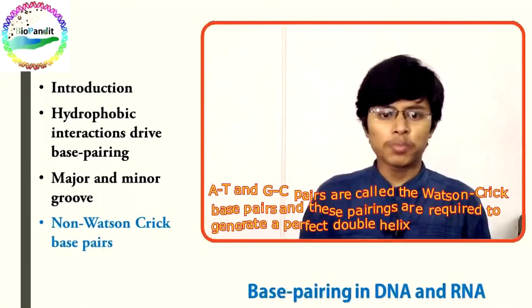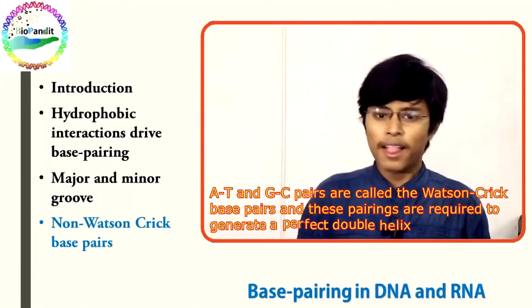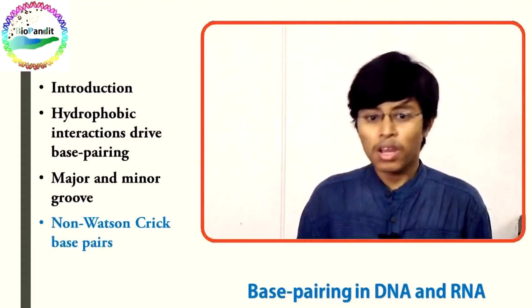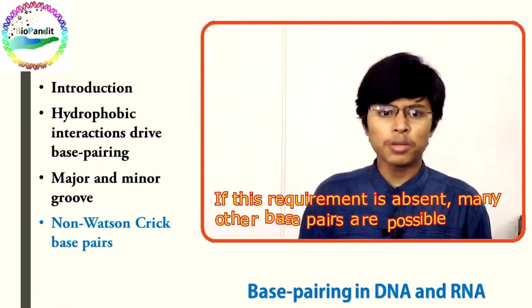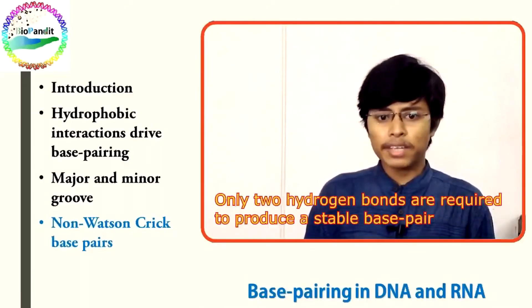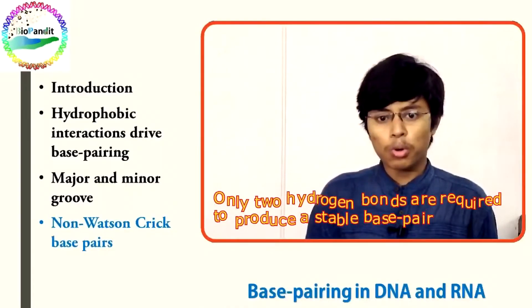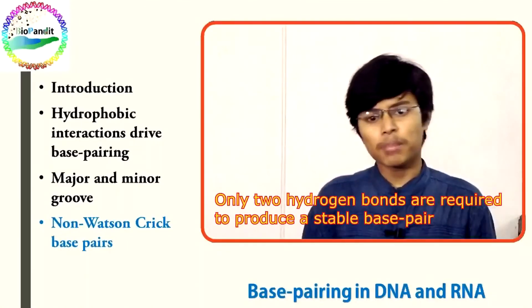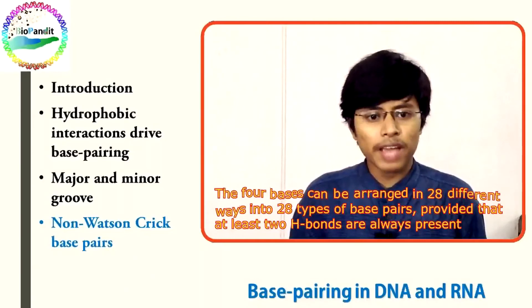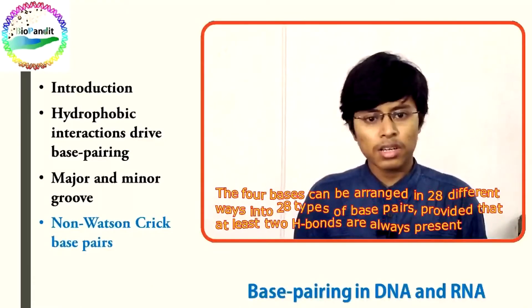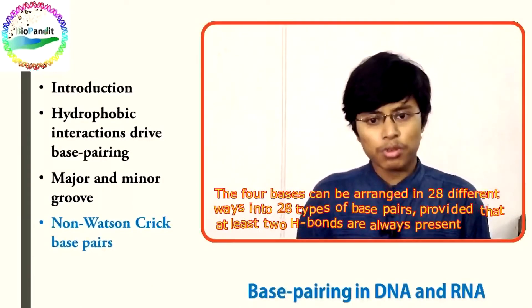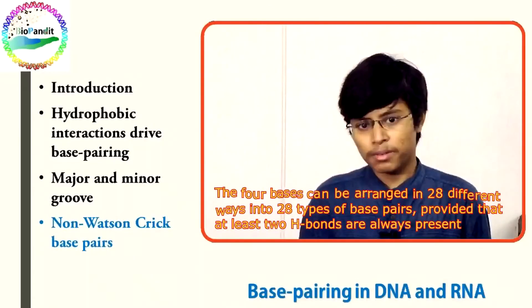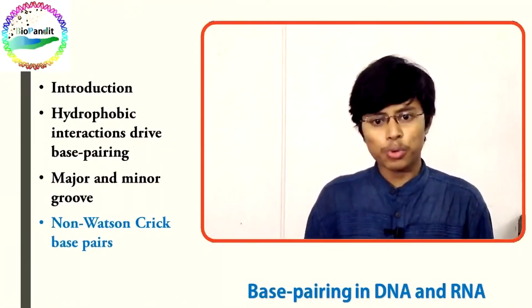AT and GC base pairs are called the Watson-Crick base pairs, and these pairings are required to generate a perfect double helix. If this requirement is absent, many other base pairs are possible. In 1984, Sanger showed that only two hydrogen bonds are required to produce a stable base pair. The four bases can be arranged in 28 different ways into 28 types of base pairs. You already know two of them — the AT and the GC Watson-Crick base pairs. Now let me show you the other five sets.